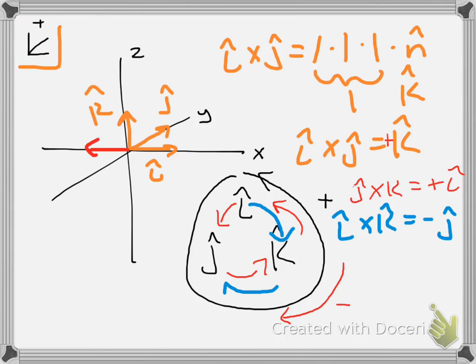If I cross k into j, again, I'm moving around the circle clockwise, that's going to give me a negative i hat. Anytime you have a unit vector crossing another unit vector in the Cartesian coordinate system, your result is going to be in terms of the other unit vector because it's the only way you can move in a direction that's normal to the two you're crossing into each other. And the sign is going to be determined by this nifty little circle that I've drawn you.